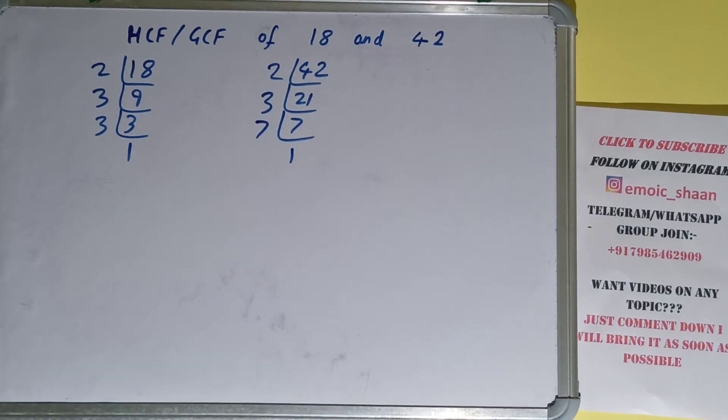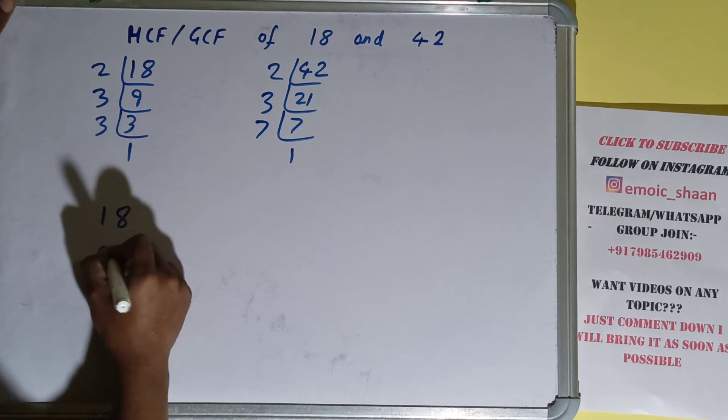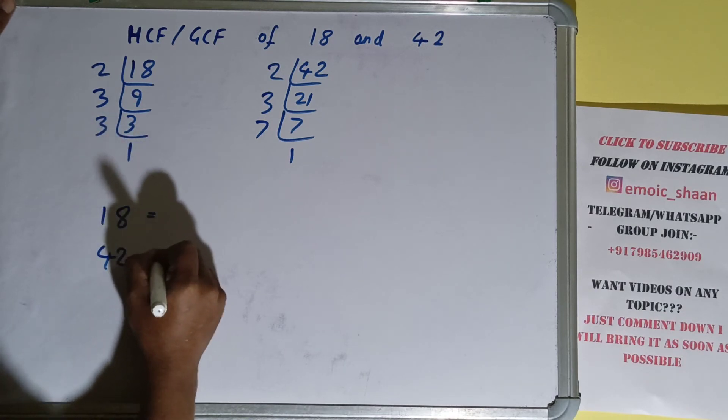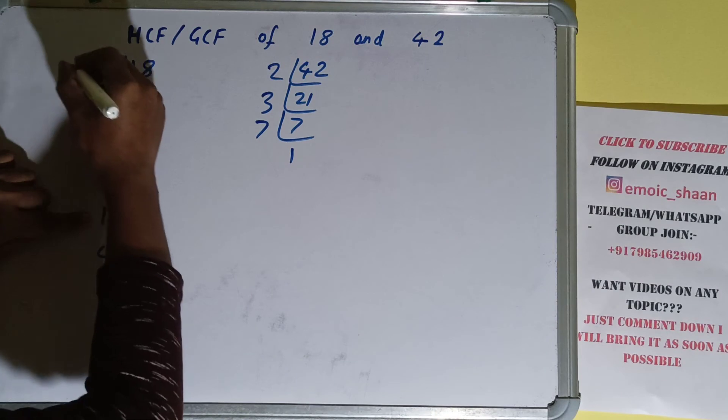The next thing we need to do is write down each of the numbers with their respective prime factors. For 18, what prime factors do we have? 2, 3, 3.